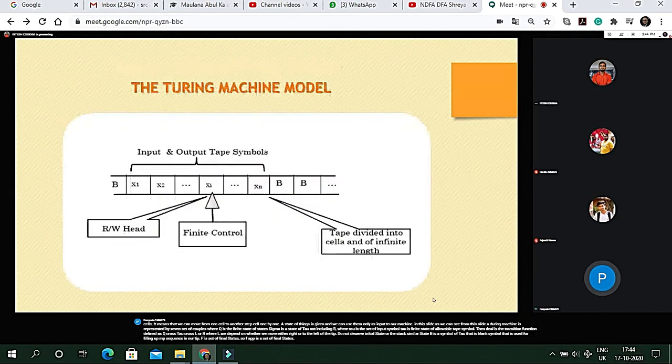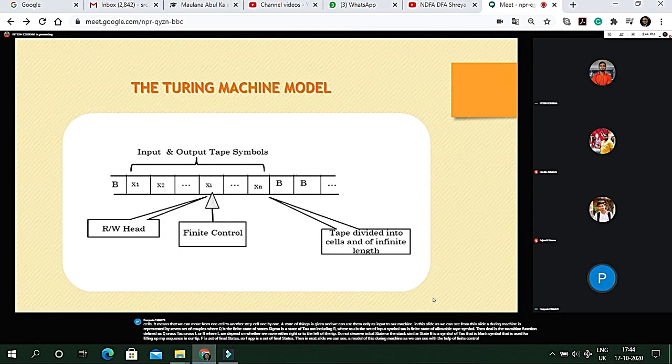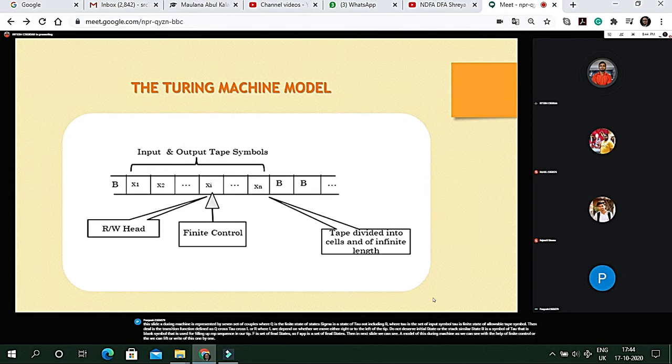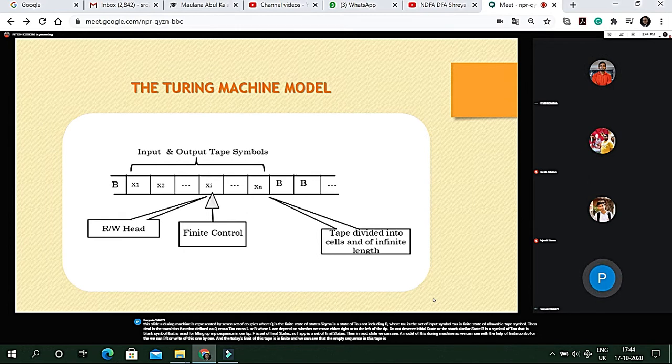Then in next slide, we can see a model of this Turing machine. As we can see, with the help of finite control, we can move to left or right of this tape one by one and the storage limit of this tape is infinite. We can see that the empty sequence in this tape is filled up by B. Now the next slide will be explained by Rajorshi.